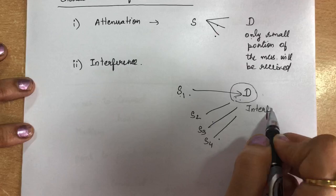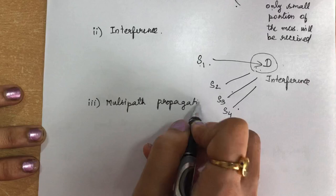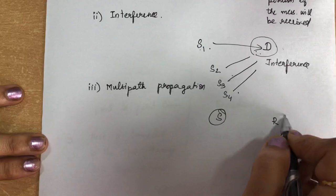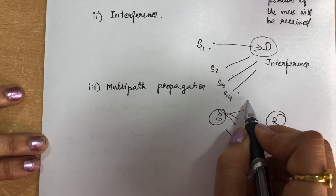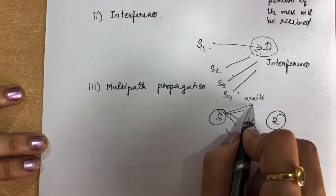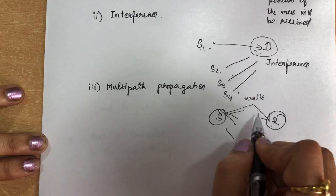The third characteristic is multipath propagation. The receiver may receive the same signal in multiple ways. Since the sender sends through broadcast, signals can reflect off walls or nearby obstacles and be sent back. The receiver will then receive the same message in multiple paths with different phases due to these obstacles. This is called multipath propagation.